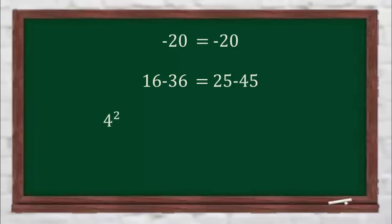Now writing 16 as 4 square and 25 as 5 square. Writing 36 as 4 multiplied by 9 and 45 as 5 multiplied by 9, and adding the fraction 81 by 4 on both sides.